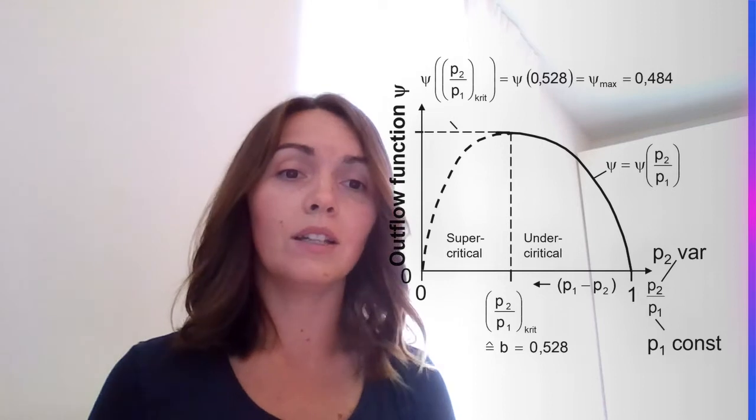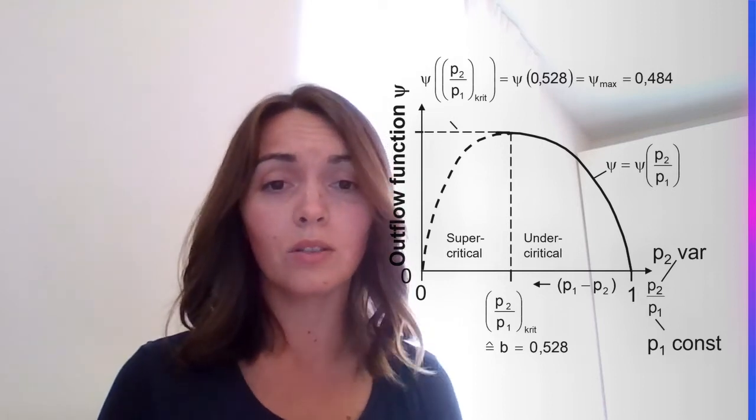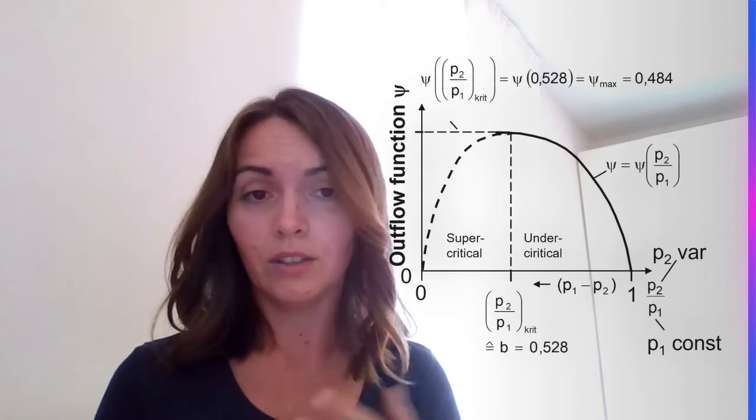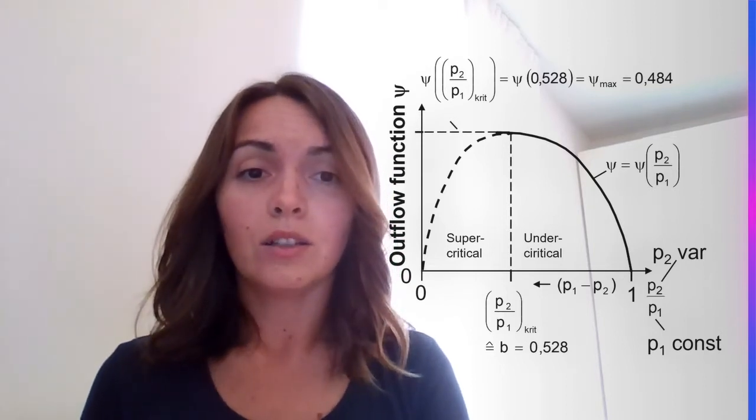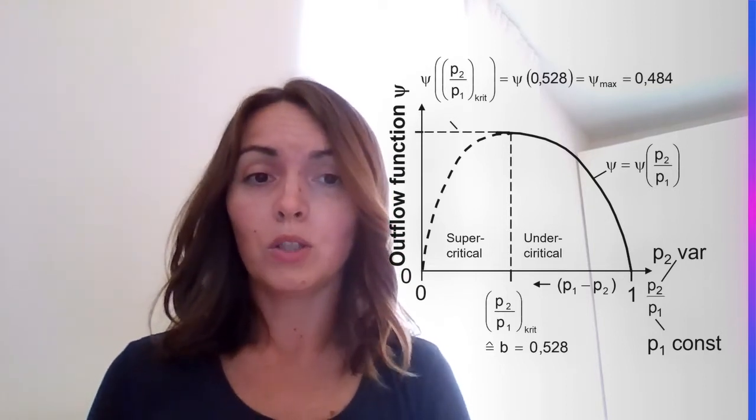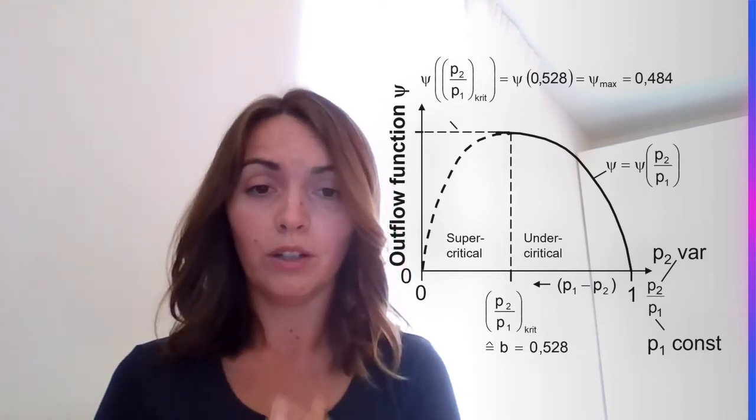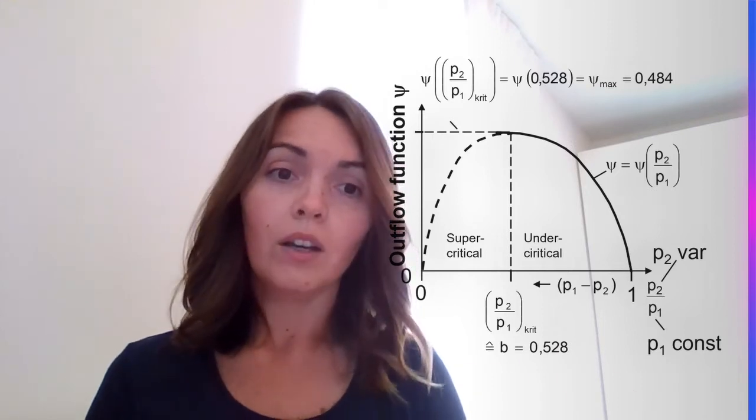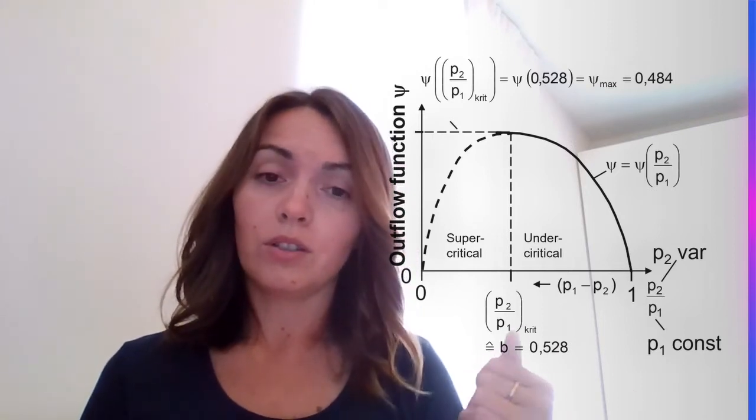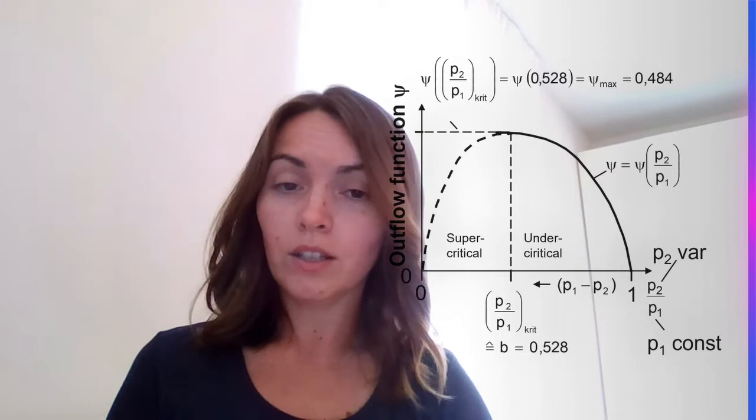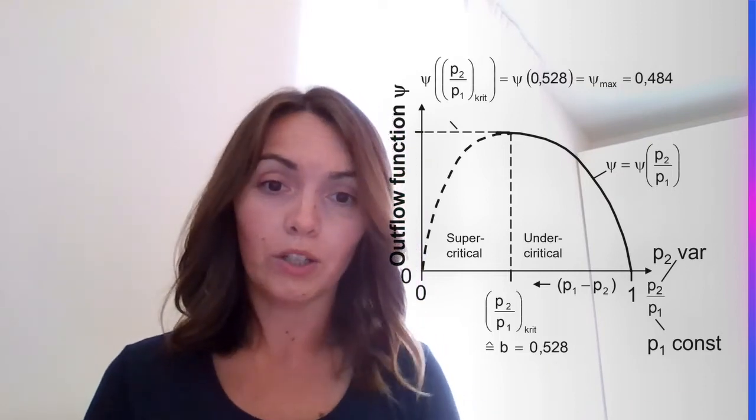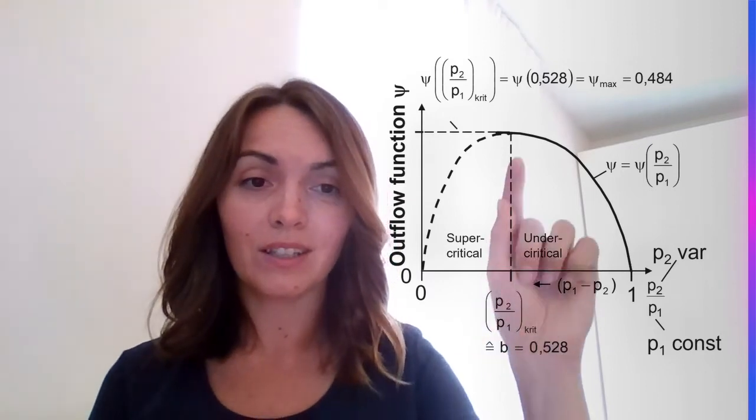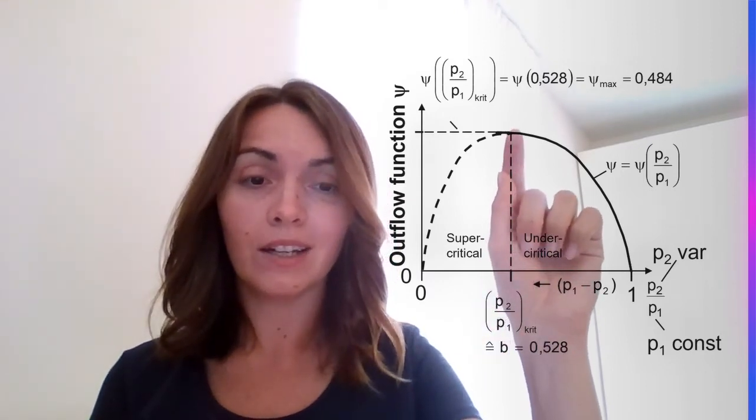And we know that the maximum velocity that the air can reach cannot be higher than the sound velocity, velocity of the sound. And there is a certain area in the air that when the relation between P1 and P2, the pressure before and after, is 0.528, we call it a critical pressure when the mass flow rate cannot be bigger. So it is this point on this diagram.